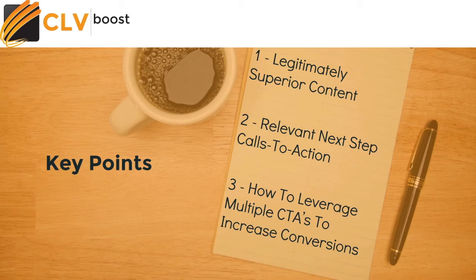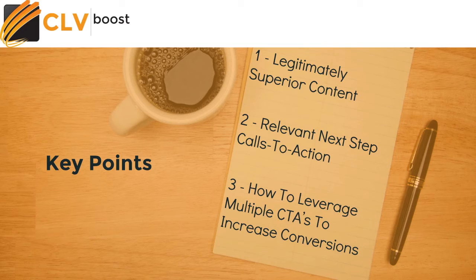Number two: relevant next-step calls to action. Personally, this is one of the most common mistakes I see marketers making. You always want your blog content to be congruent with the topic of your lead magnet. For example, if you're writing an article about SEO — search engine optimization — and then you offer an opt-in for Facebook marketing, that's going to decrease your lead conversions. There's a disconnect in the content. If somebody's clearly interested in a particular blog post, they'll probably be receptive to an e-book that expands on that particular topic. This is referred to as a content upgrade, and it's essential when it comes to generating leads on your blog.